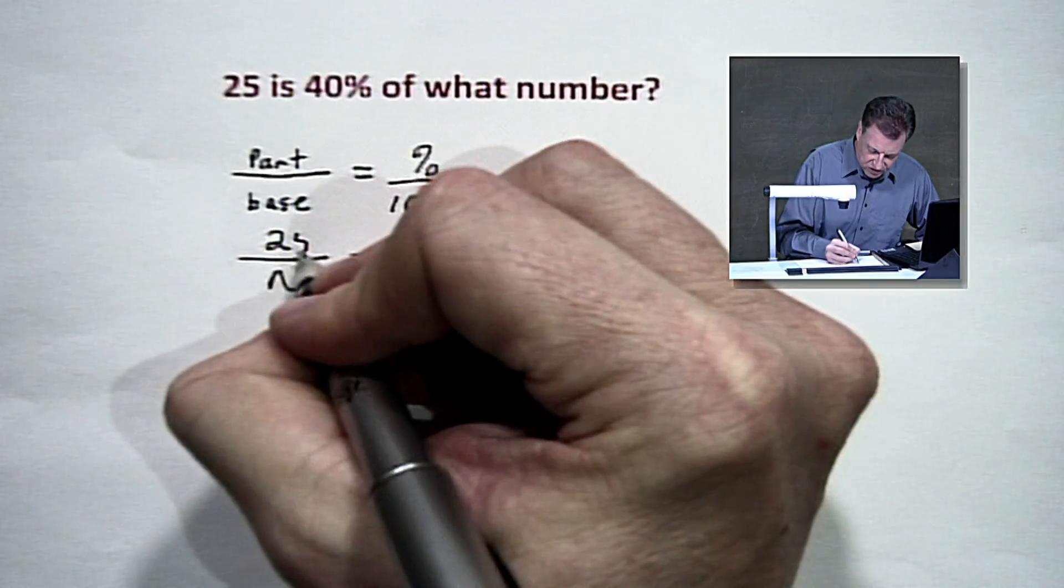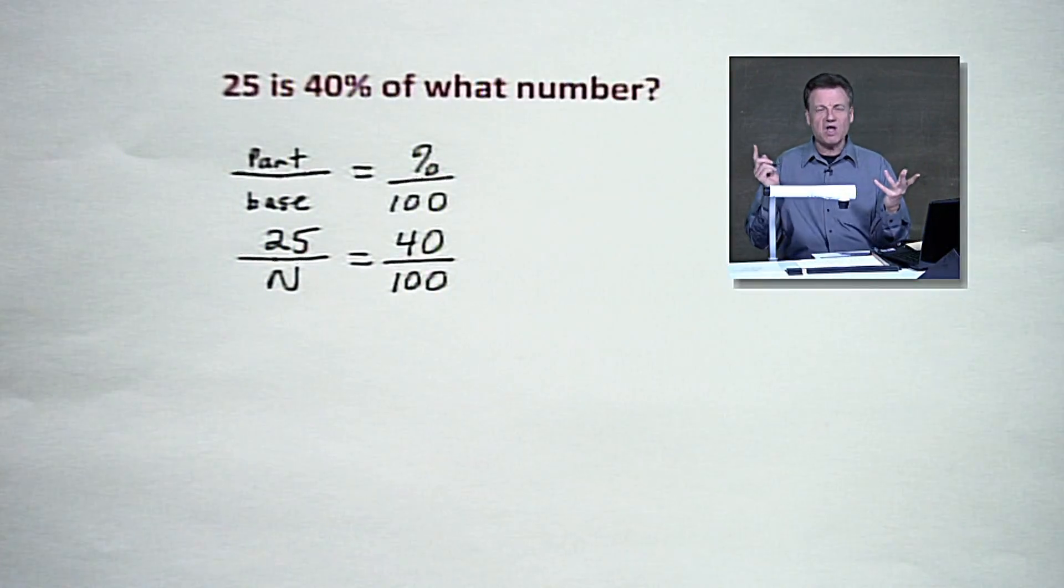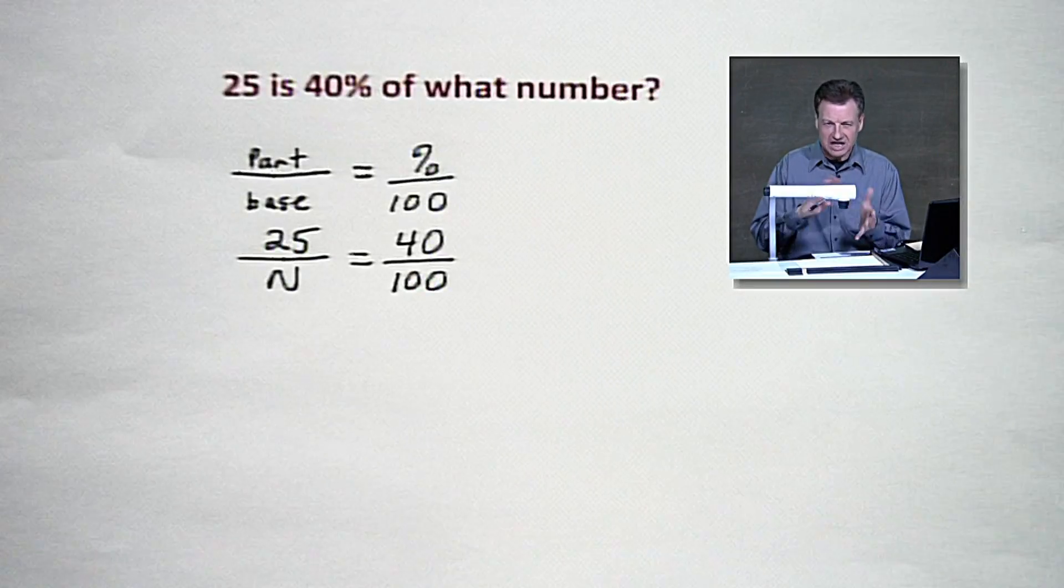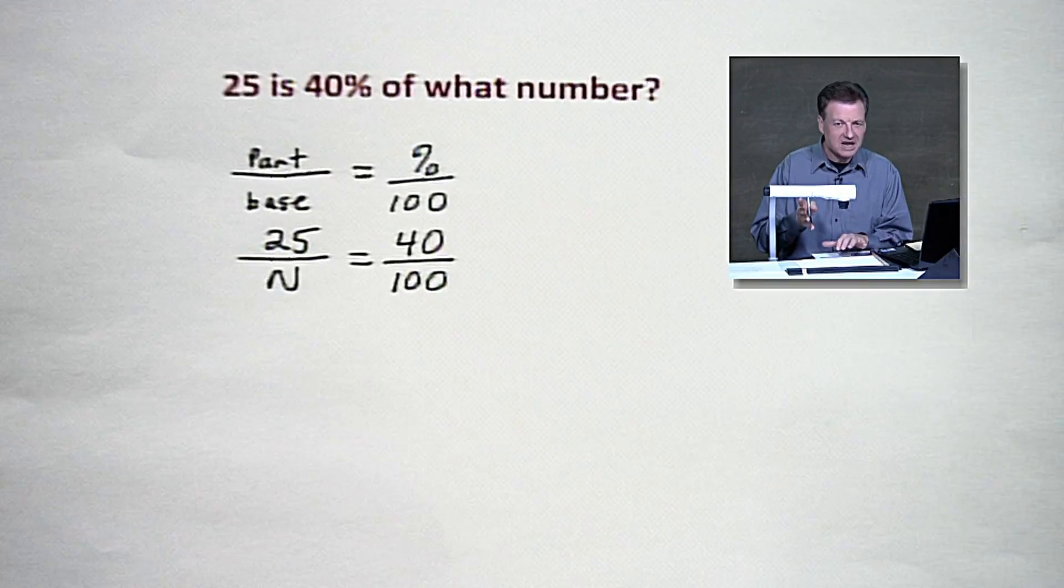And the part, our 25 is going to go right there because that basically is the result we want to get after we find 40% of something. Everybody with me? You got it out there? You're good?